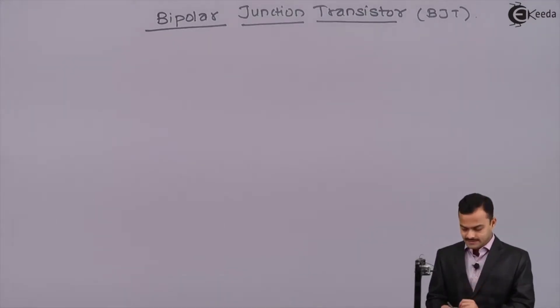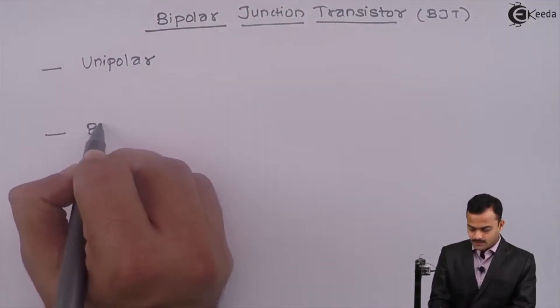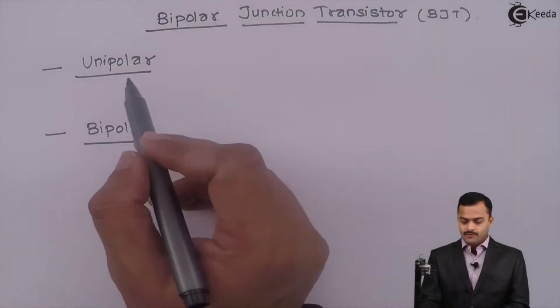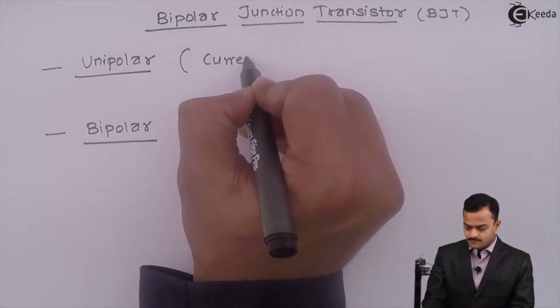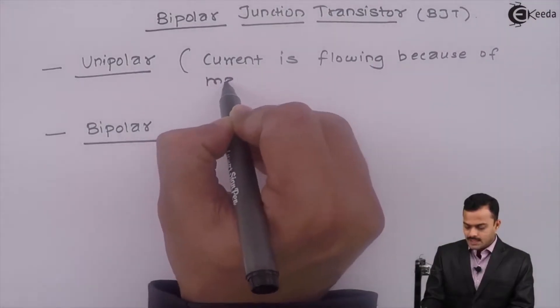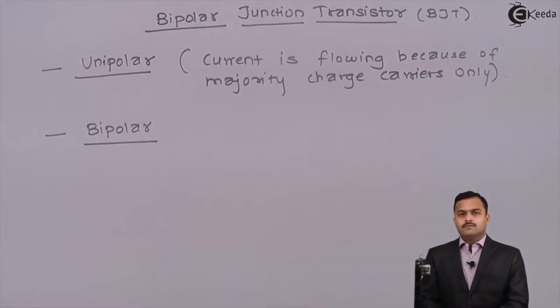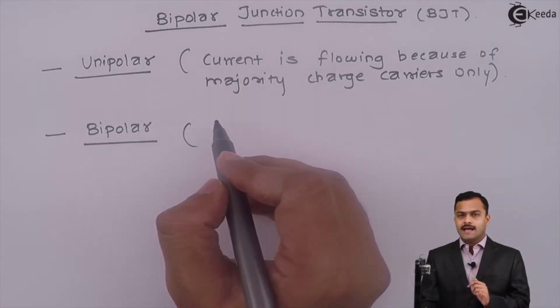There are two types of transistors. One we call unipolar and second is bipolar. Depending upon who is carrying the charge or current, the names are given as unipolar and bipolar. What does that mean? We have charge carriers. In unipolar, current is flowing because of majority charge carriers only. Whereas in case of bipolar, current is flowing because of both the charge carriers, majority and minority.